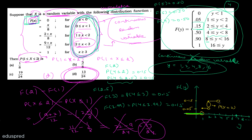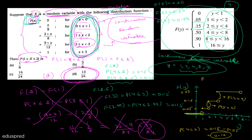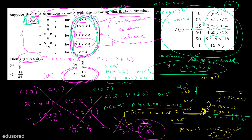4 से 8 के बीच F(y) = 0.50 है। 4 पर open circle था, 4 पर included वाला point 0.50 से शुरू होगा और 8 तक जाएगा। यह जो jump है वो probability है y = 4 की। Probability that y = 2 is 0.15 minus 0.05 = 0.10। Probability that y = 1 is जो jump है 0 से 0.05 तक, यानी 0.05 minus 0 = 0.05।